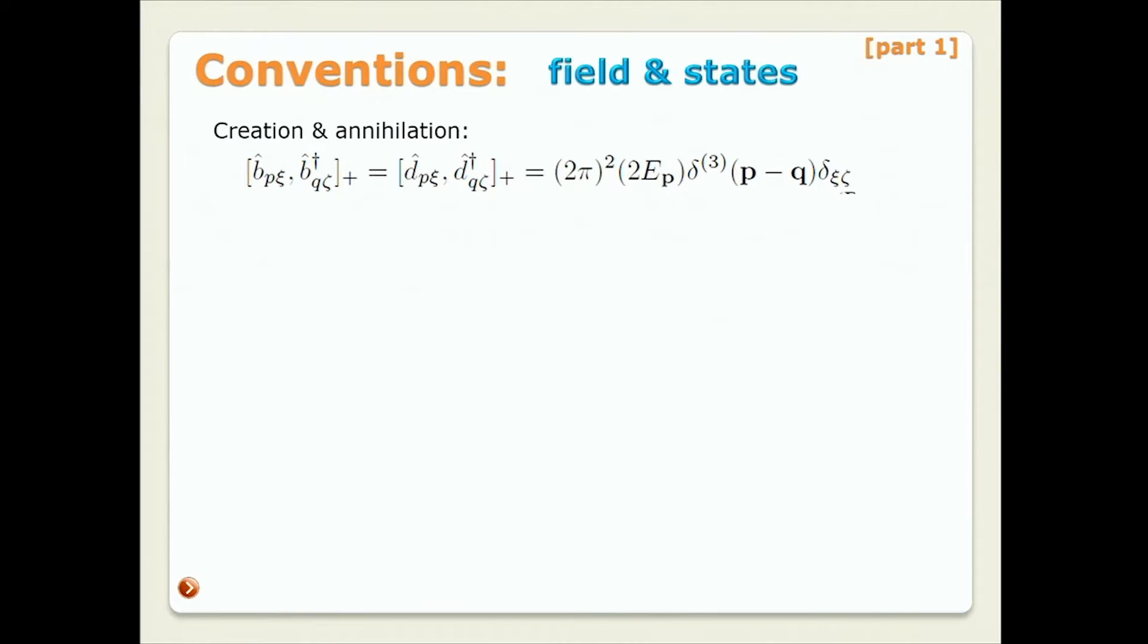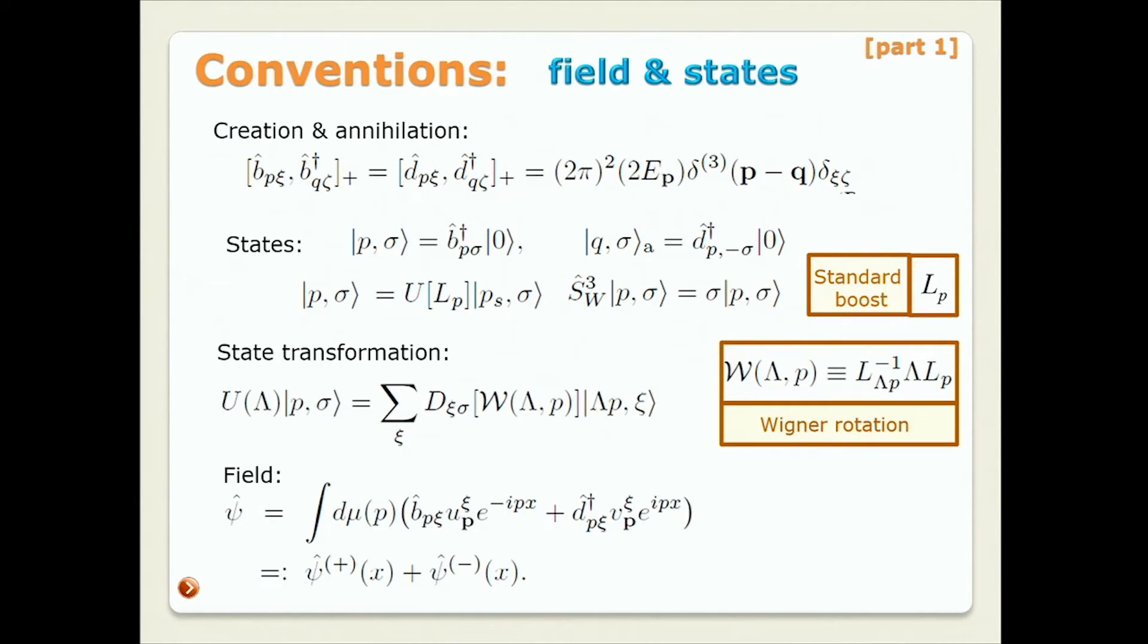Okay, but then we need to talk about conventions. Here they are. We define states of definite momentum and spin by performing the standard boost from the rest frame and spin, rest frame spin there. General momentum eigenstate transform unitarily, where D is a representation for spin one-half particles, just SU-2 matrix, of Wigner transformation, Wigner little group element. For massive particles, it's a rotation. And we write field with creation-annihilation operators for particles and antiparticles. And we're dealing with Dirac fermions. So UP and VP are positive and negative energy solutions. We'll talk about their conventions a bit later. All right. Lorentz invariant measure also represented here.